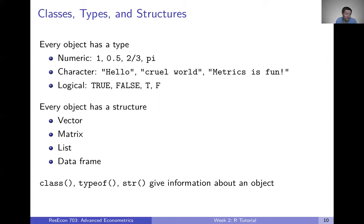Every object also has some kind of structure — that could be a vector, a matrix, a list, or a data frame. This isn't an exhaustive list of every structure that exists in R, but it's going to be the main ones we interact with, and we're going to talk about them in the rest of this video. You can use functions like class(), typeof(), or str() to get information about an object if you're not sure whether something is organized as a matrix, a list, a vector, or something else.